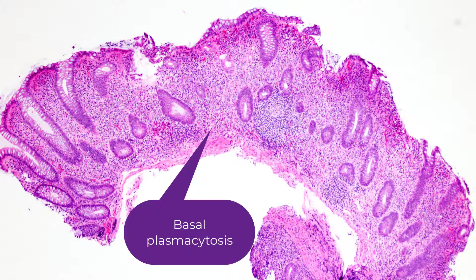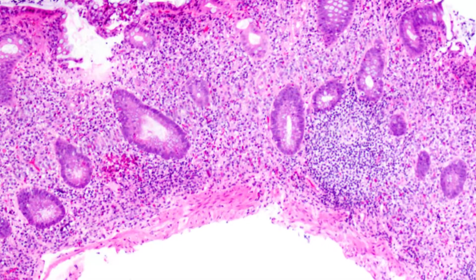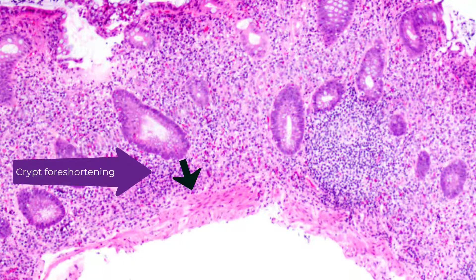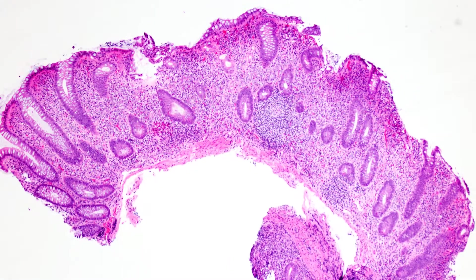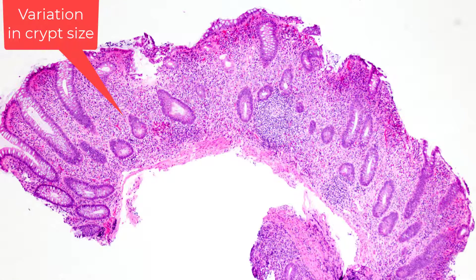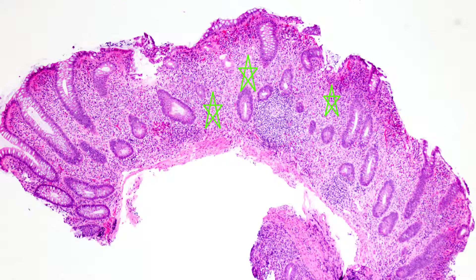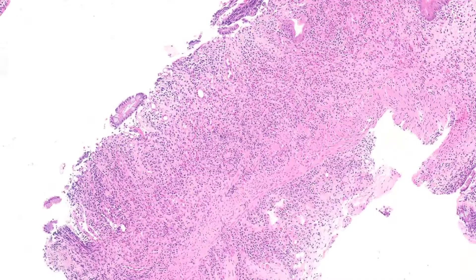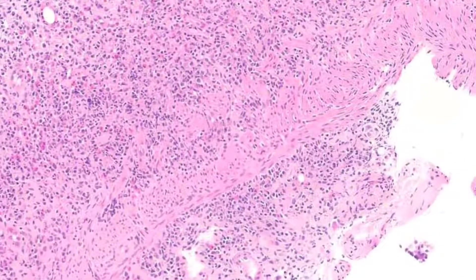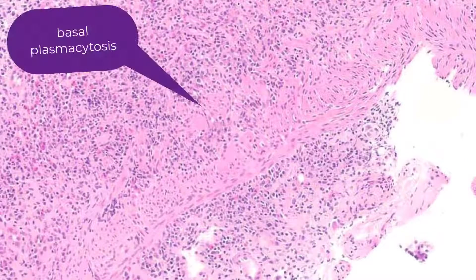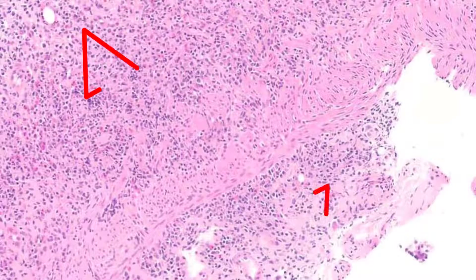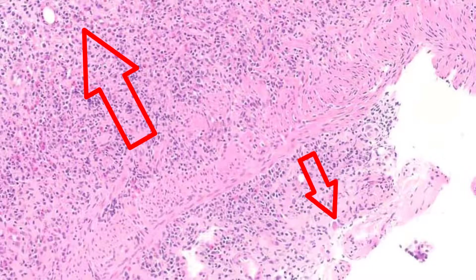Perhaps, but I'd like to see a higher power. There's shortening of the crypts — so-called crypt foreshortening — that is, the crypts do not reach the muscularis mucosae. There's variation in crypt size. There's expansion of the lamina propria with a ton of lymphocytes and plasma cells. And in some cases, the most severe examples of particularly ulcerative colitis lose crypts altogether.